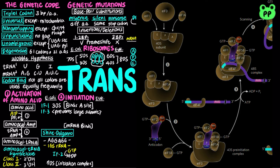During eukaryotic initiation, eukaryotic initiation factor 1A (EIF1A) binds the A site of the 40S subunit, preventing premature tRNA binding. EIF1A is the homologue of initiation factor 1 during bacterial initiation. EIF3 then binds the 40S subunit, preventing the 40S and 60S subunits from combining prematurely.